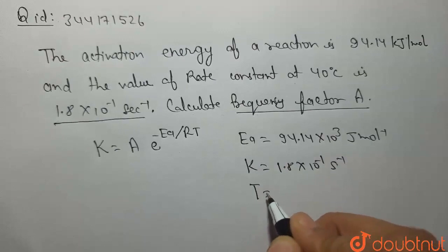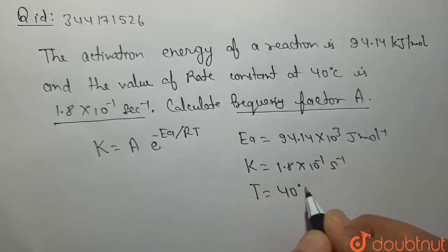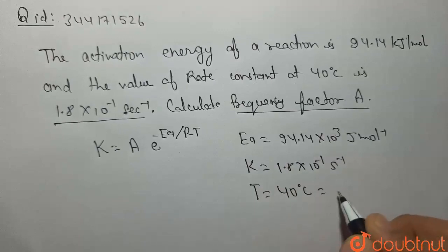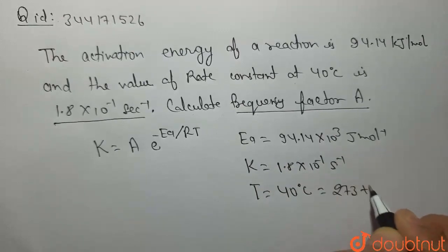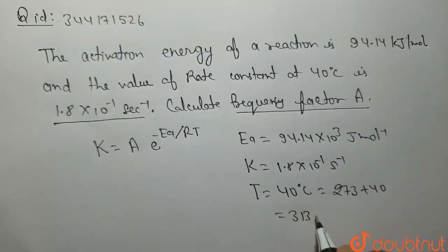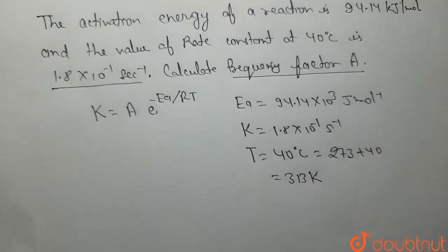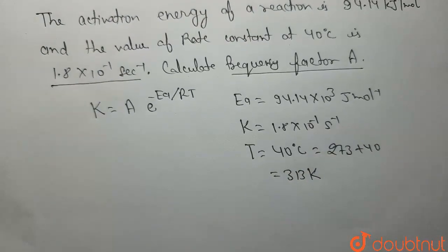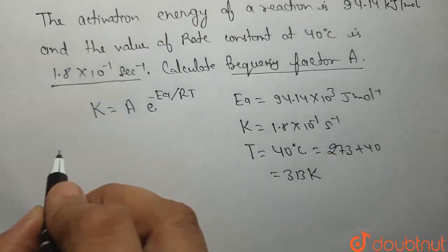Temperature given है 40 degree Celsius. Kelvin में convert करेंगे: 273 + 40 = 313 Kelvin. तो इतनी value तो given है।